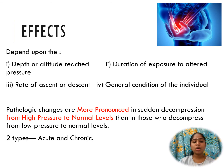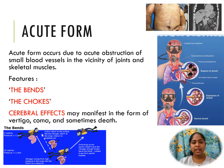The changes are more serious in obese persons, as nitrogen gas is more soluble in fat than in body fluids. The clinical effects of decompression sickness are of two types: one is acute and the other is chronic. Acute form of decompression sickness occurs due to acute obstruction of small blood vessels in relationship to the joints and skeletal muscles. Bends, chokes, and cerebral effects are the features of the acute form.